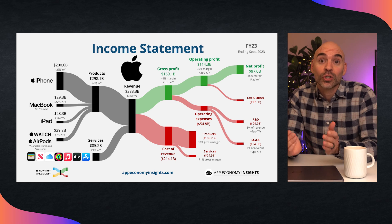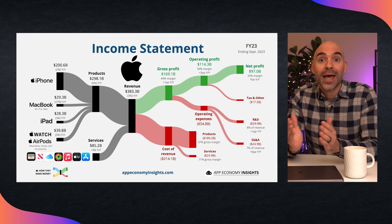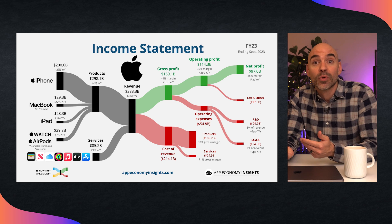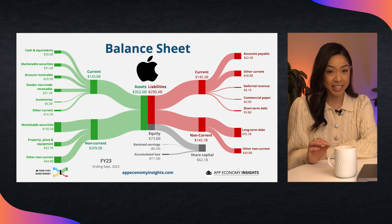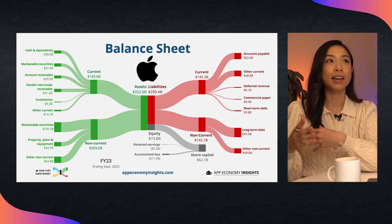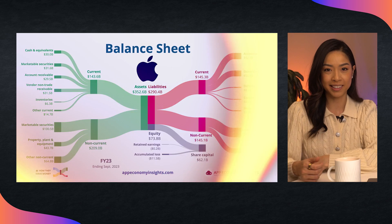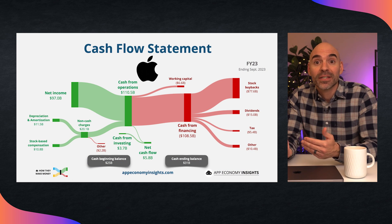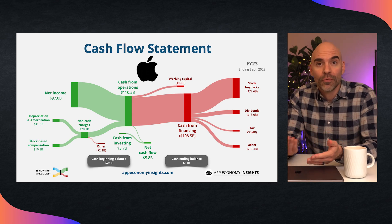The income statement shows a company's revenue and expenses over a specific period, resulting in a net profit or loss. The balance sheet shows a company's assets, liabilities, and equity at a specific point in time — it's a snapshot at the end of a period. And the cash flow statement shows how a company's activities have affected its cash position over a specific period. We have dedicated videos on each of them on our channel, so we left a link in the description below.